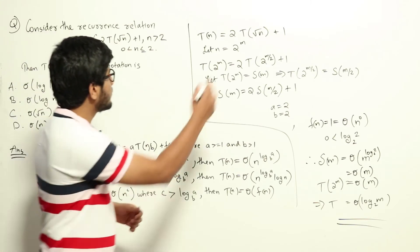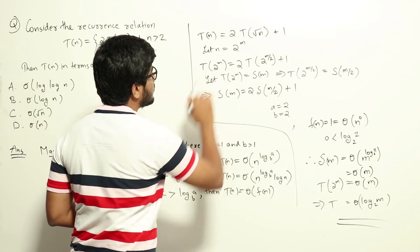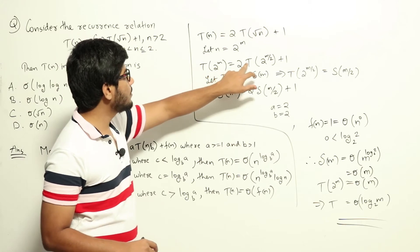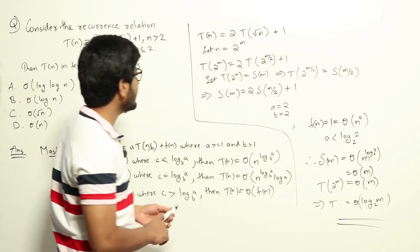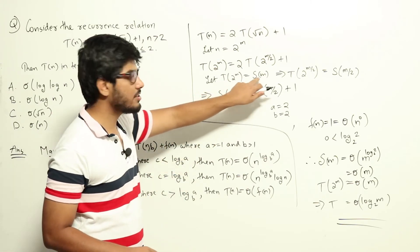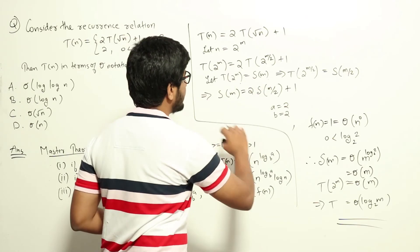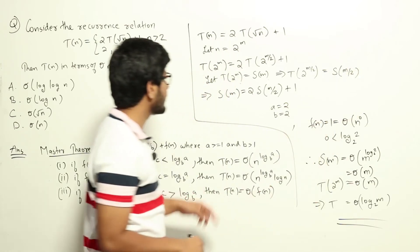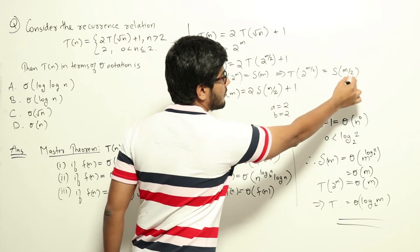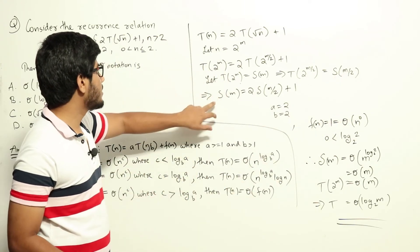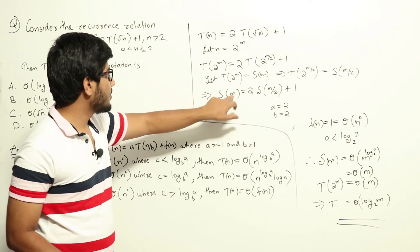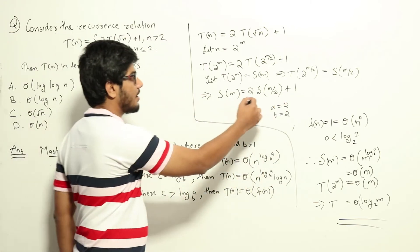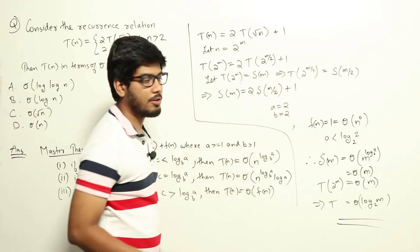Let us try putting n = 2^m. When n = 2^m, we can rewrite it as T(2^m) = 2·T(2^(m/2)) + 1. Now let S(m) = T(2^m). Then T(2^(m/2)) = S(m/2). So we can rewrite the relation as S(m) = 2·S(m/2) + 1. This is now of the form a·T(n/b), where a = 2, b = 2, and f(n) = 1.